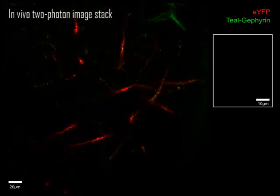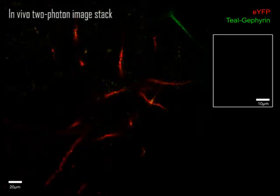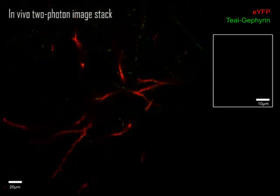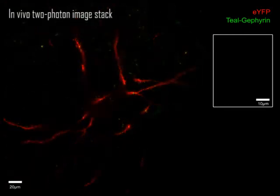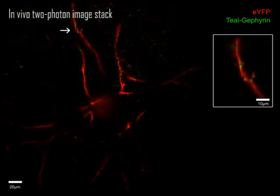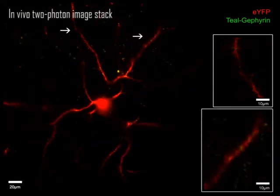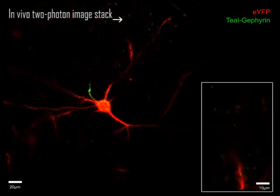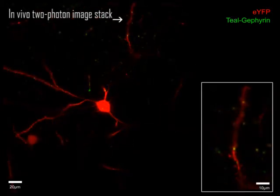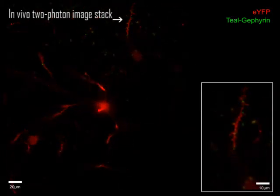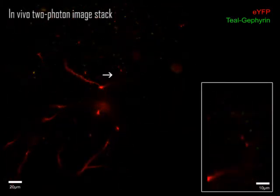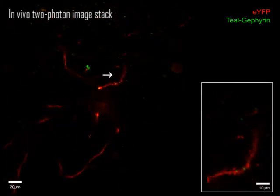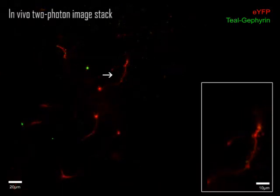At each time point, we acquired a three-dimensional volume stack that encompassed the cell and the majority of its dendritic arbors. We were able to see dendrites bearing spines and teodrephrine puncta expressed across the dendritic shaft and on some dendritic spines.